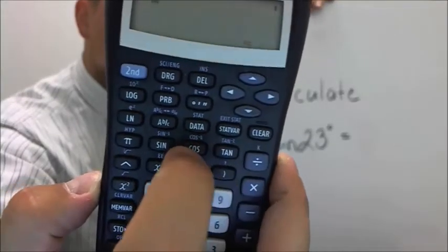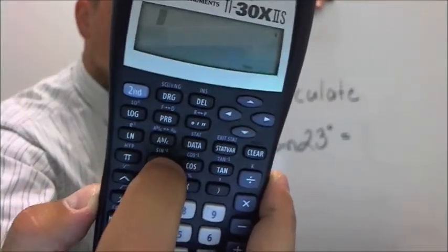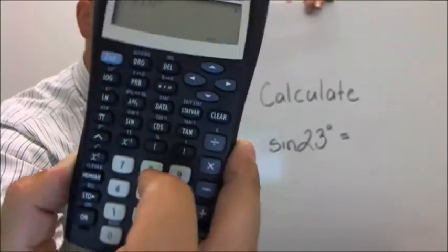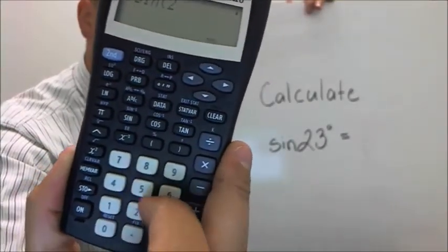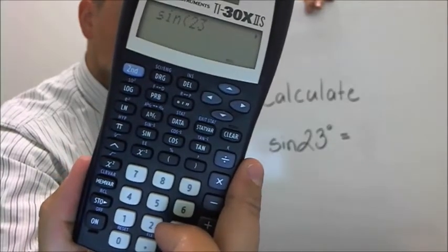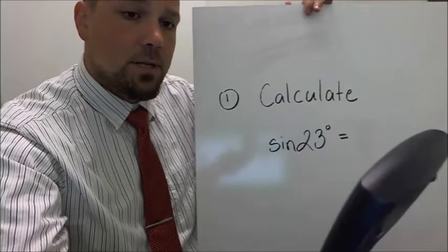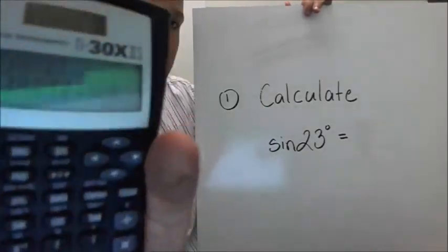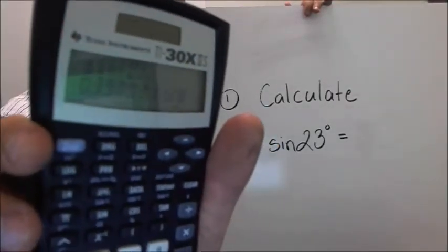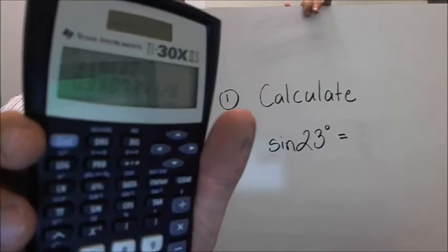And you'll see a sine button on your calculator. So the sine button is right here. So I'm going to hit sine, and then I'm going to hit 23. So sine 23 should show up. And then I'm just going to hit the equals button. And the answer is right there. 0.39.